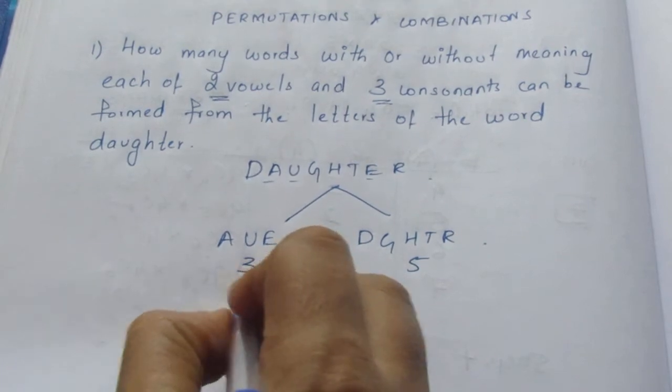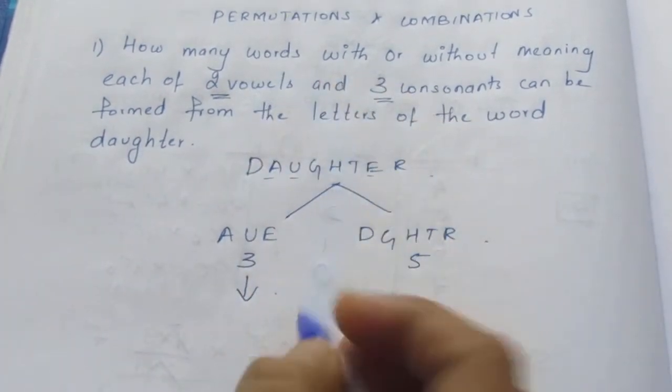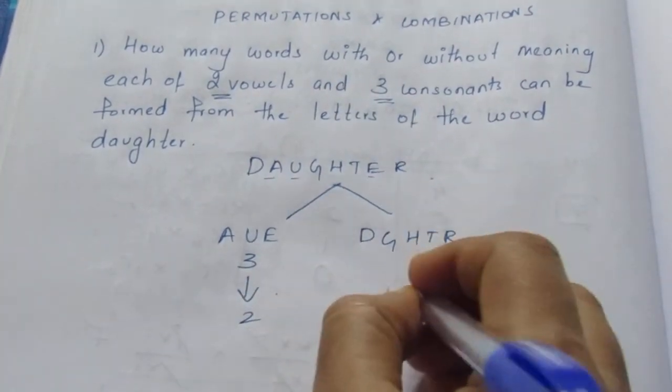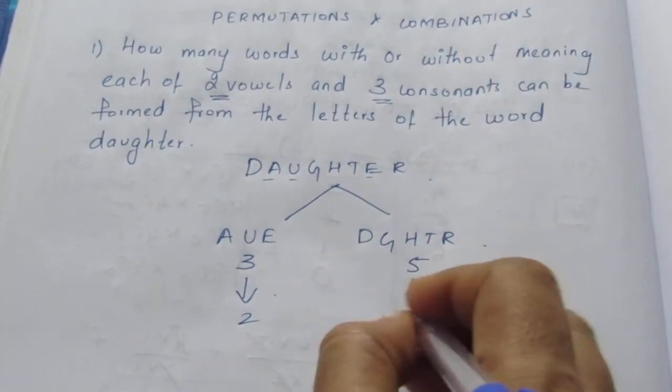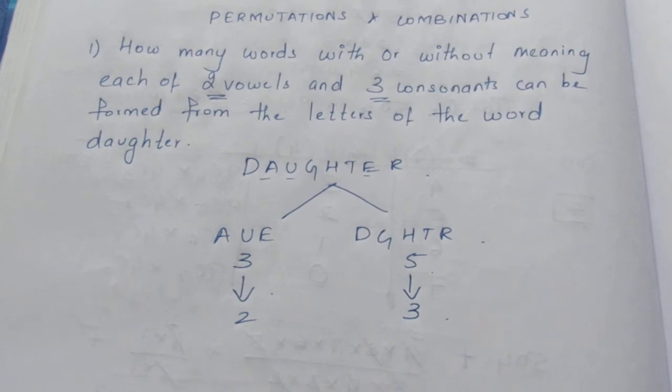In that, I need to select two vowels. So I need to select two vowels from three and from five consonants, I need to select three consonants. This is the condition they have given.